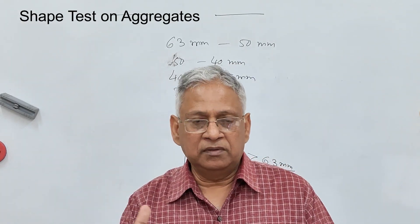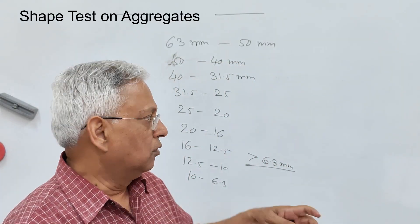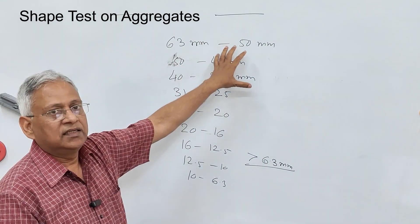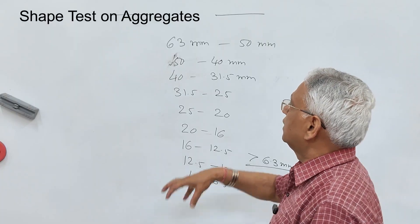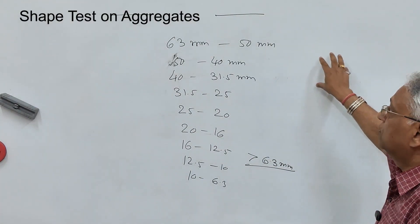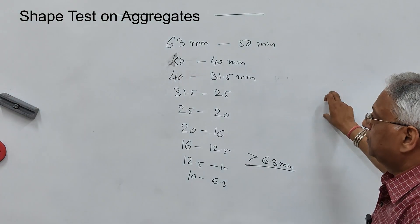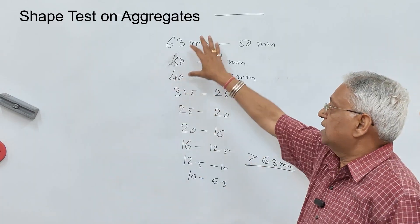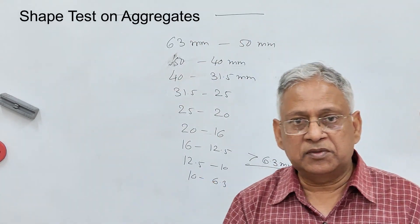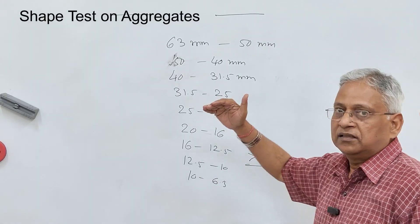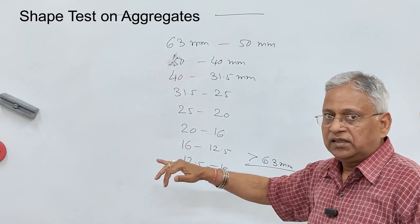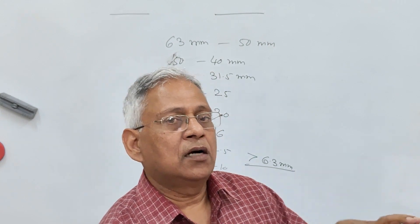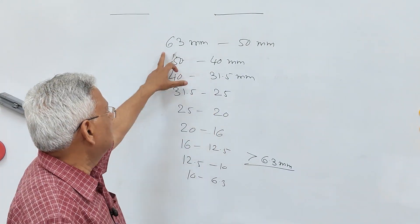Take a representative sample from the stockpile, remove the aggregate passing 6.3 mm, and separate the aggregate into different sizes. For example, for bituminous concrete you can start from passing 25 mm retained on 20 mm, passing 20 mm retained on 16 mm, and so on. Carry out a sieve analysis of the aggregate using these sieve sizes.